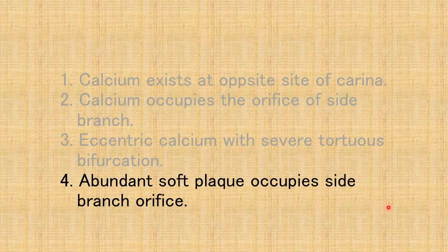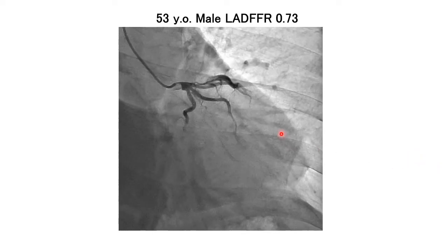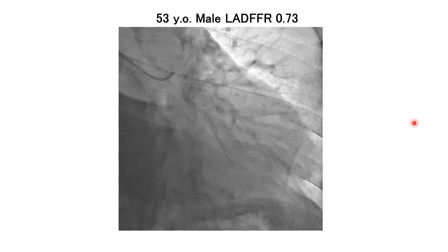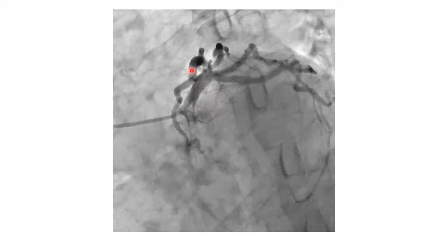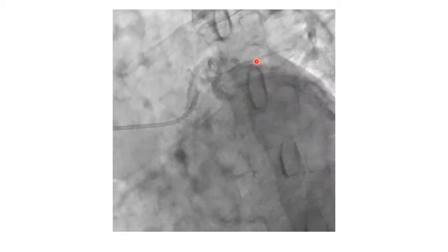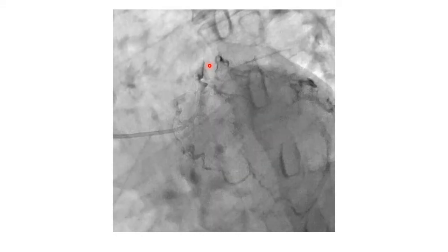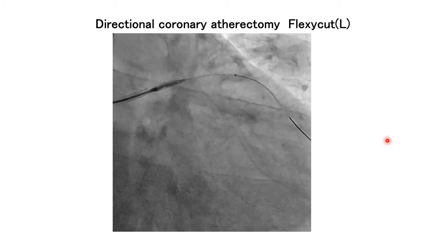The final case is abundant soft plaque occupying the side branch orifice. A 53-year-old male with severe stenosis at the orifice of LAD. The diagonal branch, high lateral branch, and circumflex branch are all involved in the bifurcation. To avoid LMT stenting, directional atherectomy using FlexCut was performed at the orifice of LAD.